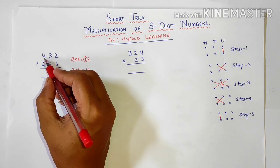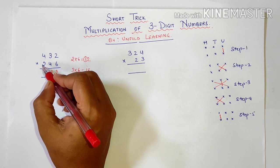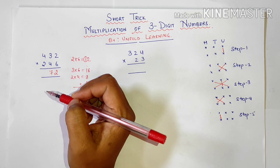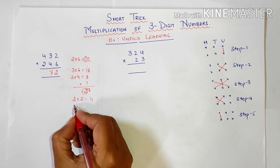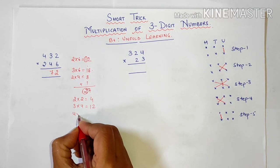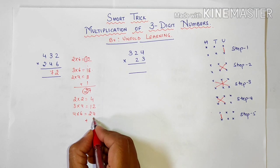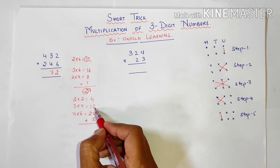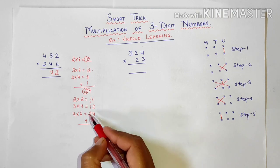Next step will be with all units place, units and units place, and tens and tens place we will multiply and add. So let us follow the step. 2 into 2 is 4. 3 into 4 is 12. 4 into 6 is 24. And carry over 2. So now we will add all of them. 4 plus 2 is 6. 6 plus 4 is 10. 10 plus 2 is 12. 1 is carry over.